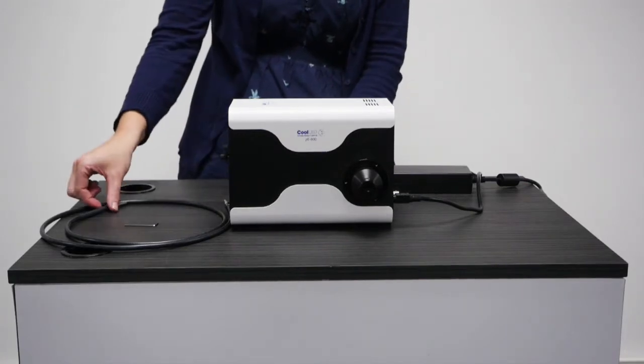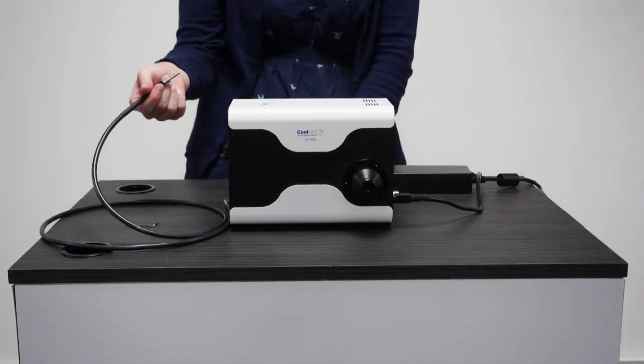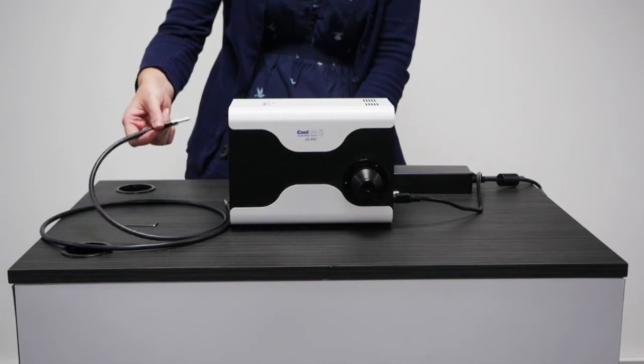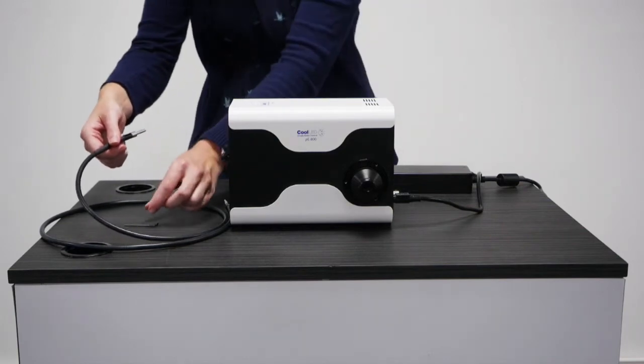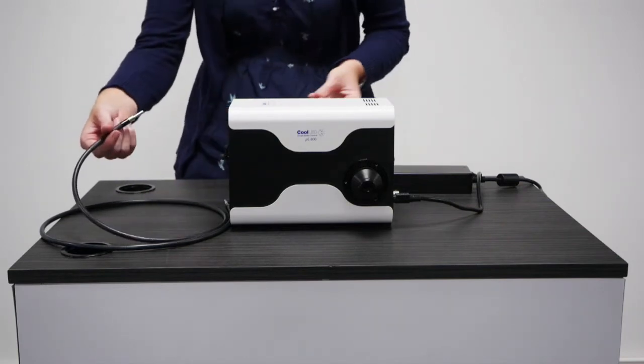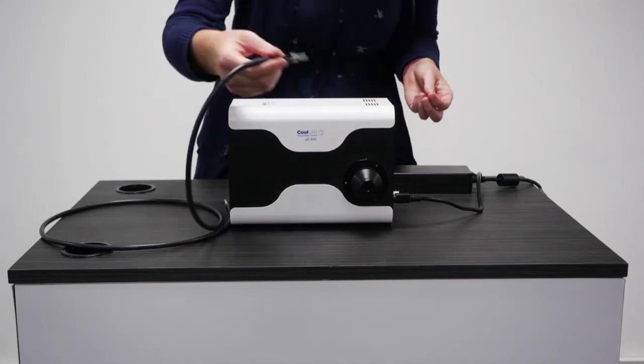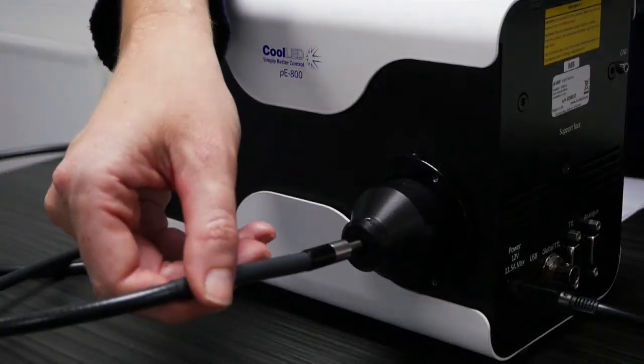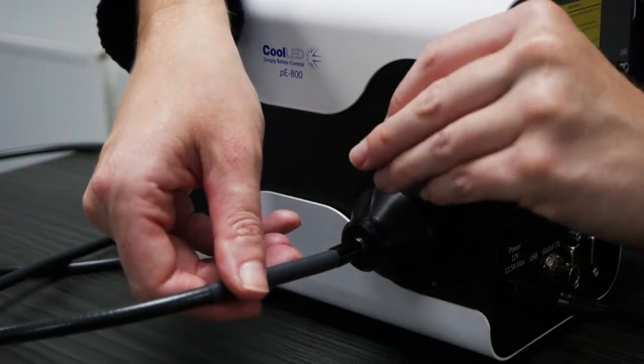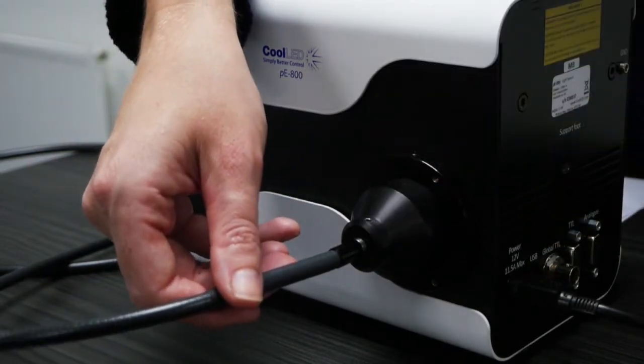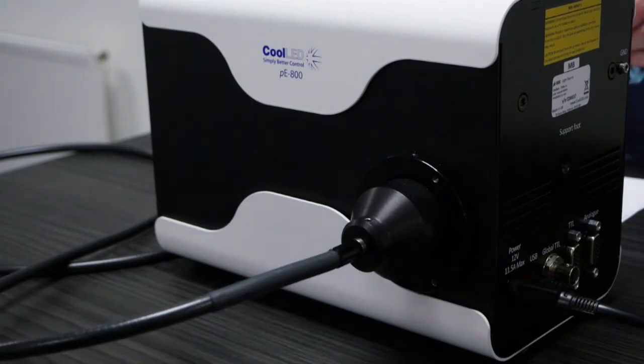Light is delivered to the microscope via a 3 mm liquid light guide. If you already have your own or you have ordered a new one with your P800, then insert the end liquid light guide into the light source and secure using the hex key provided.